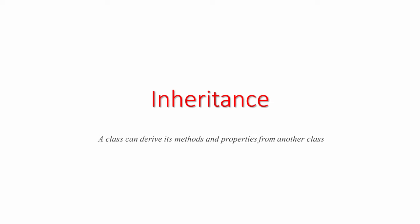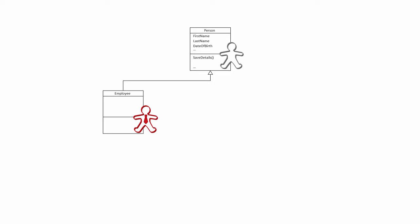The third fundamental concept of object-oriented programming is inheritance. This means that a class can derive its methods and properties from another class. Inheritance can result in a hierarchy of classes. For example, this person class defines the methods and properties of a person object. An employee in a business is also a person, so through inheritance an employee class derives the methods and properties of the person class — an employee is a type of person. A customer of the business is also a person, so through inheritance a customer class also derives the methods and properties of the person class — a customer is a type of person.